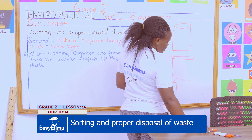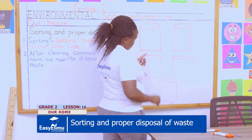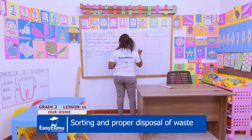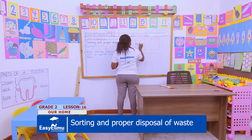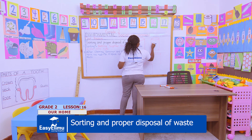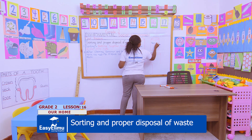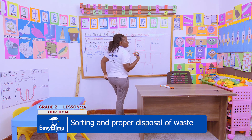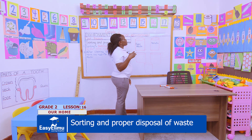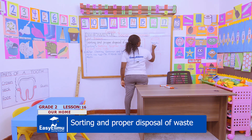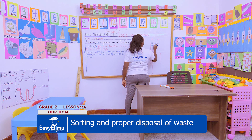I am going to label the waste bins. This one will be labeled as paper waste — so all the paper waste will be put in this bin. Then this one will be labeled as metallic waste. In case I have any needle, any razor blade, or any nail cutter that is not in use and I want to dispose of it, I'll put it in the metallic waste bin.